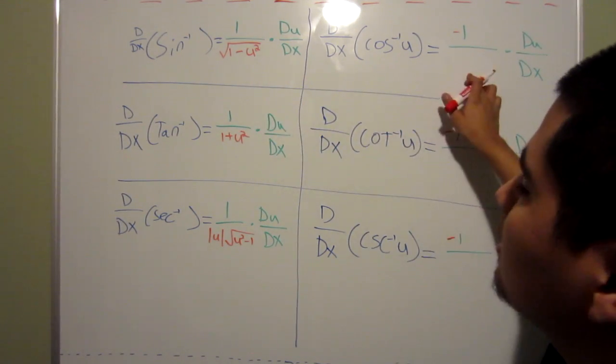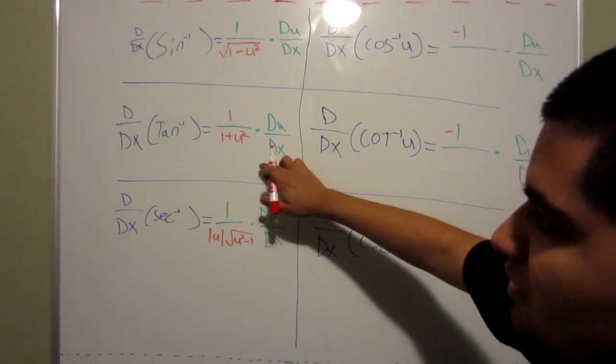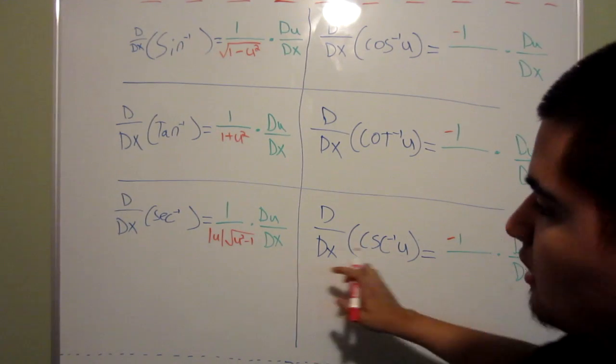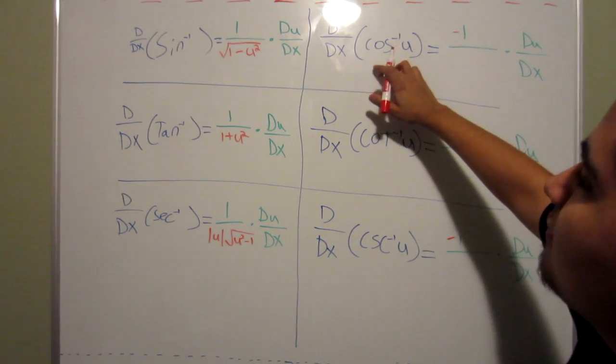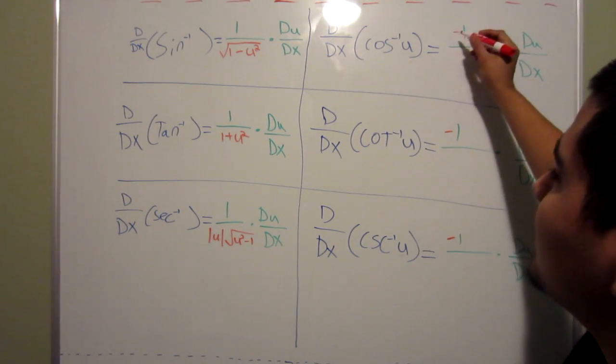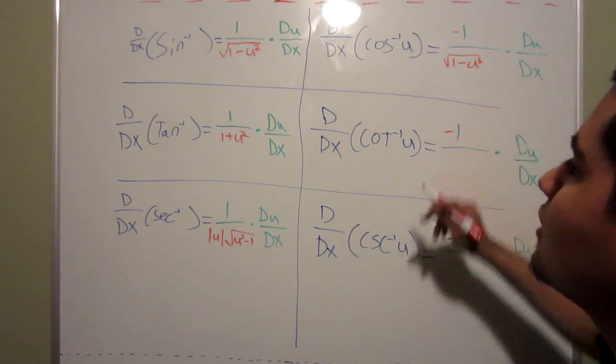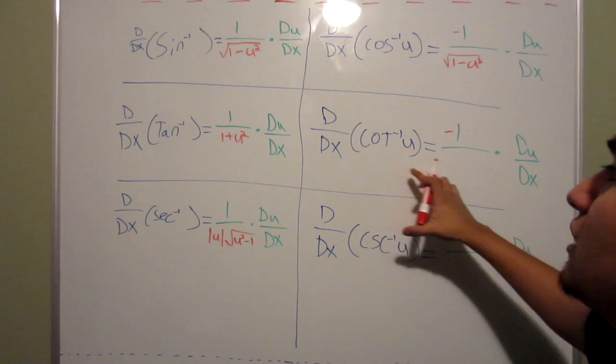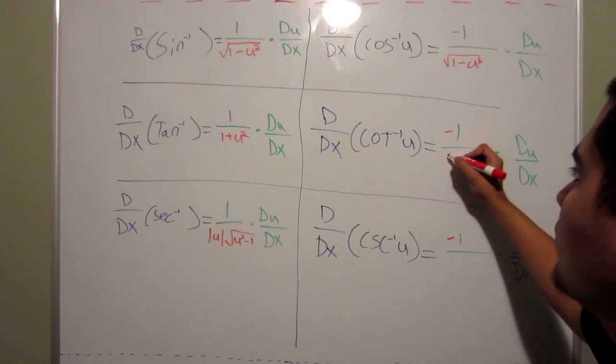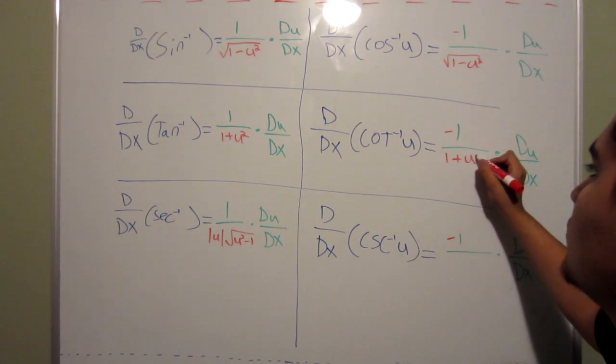So sine and cosine are the same, since they're right next to each other, same with tangent and cotangent, and same with secant and cosecant. So the derivative of arc cosine would be negative one over root one minus u squared.